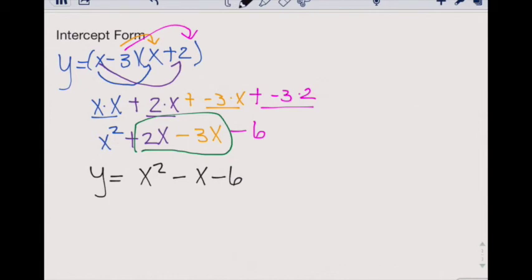If you're wondering where that minus x came from, recall 2x minus 3x will give us minus 1x. This is how you convert vertex and intercept form into your standard form equations.